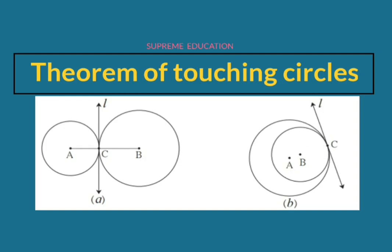The common point between the circles and the line is called the point of contact. There are two types of touching circles: externally touching circles and internally touching circles. In both figures there are two circles with centers A and B. In the first figure these two circles touch each other externally at point C, and in the second figure they touch each other internally at point C. Line L is the common tangent to both circles.